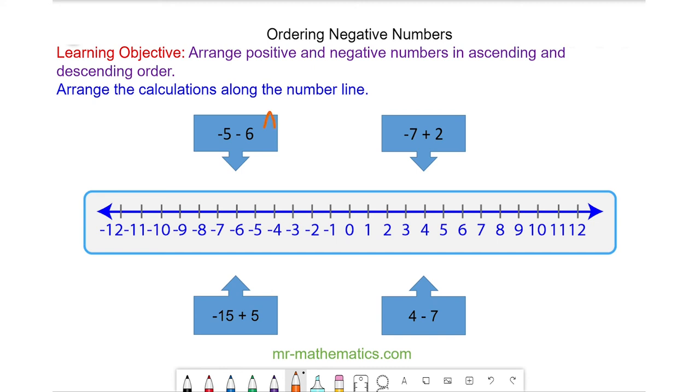So first one, we have negative 5 take away 6. We start at negative 5 and we're taking away 6 in this direction, so we have negative 11, which is negative 5 take away 6.